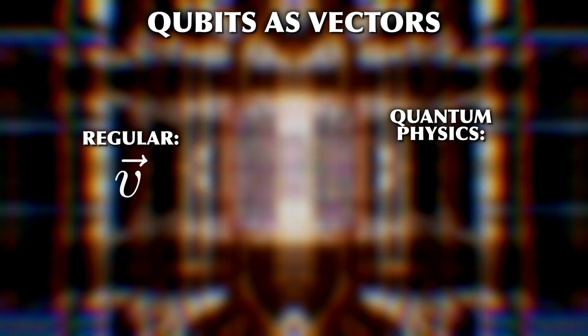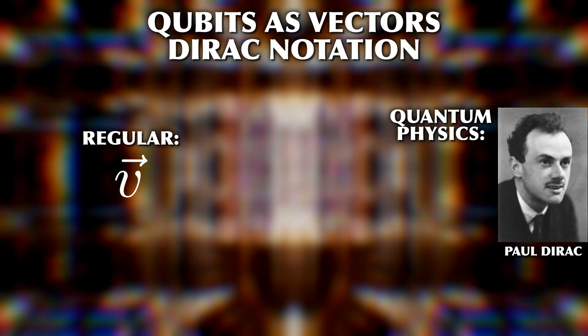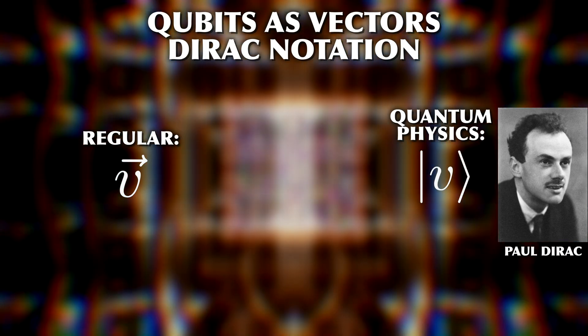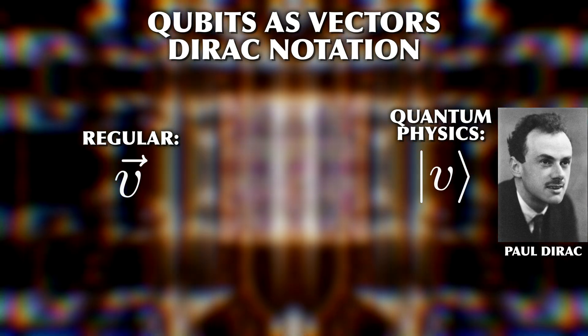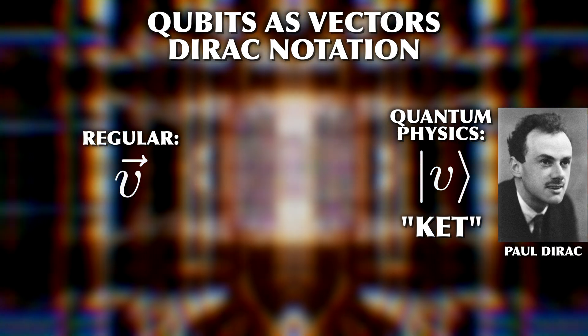You may have seen this before. In quantum physics we use a slightly different notation for vectors called the Dirac notation. We write a state vector like this and call it a ket for, quote, silly reasons.